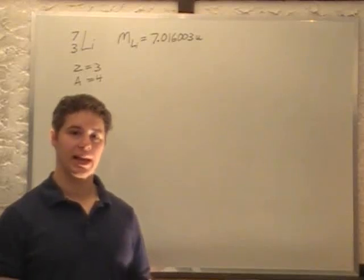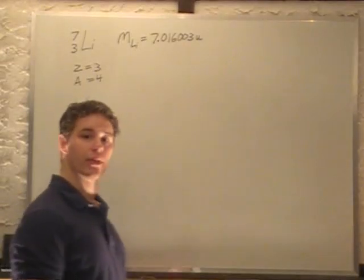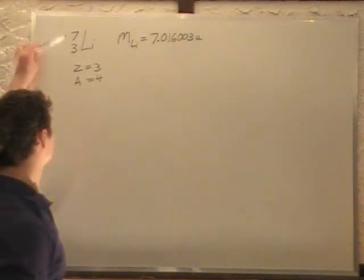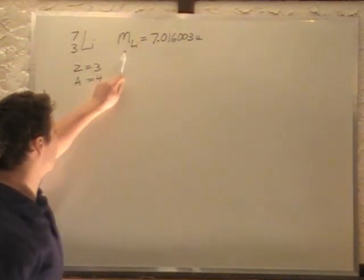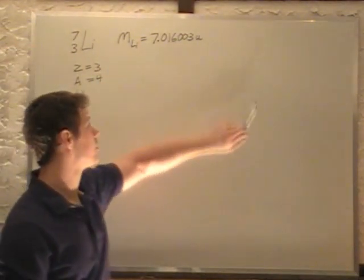What is the binding energy in MeV of 7,3 lithium? So, 7,3 lithium with a mass of 7.016003U.